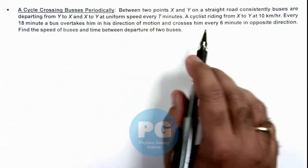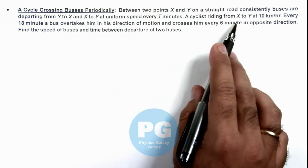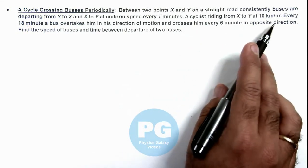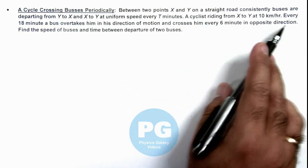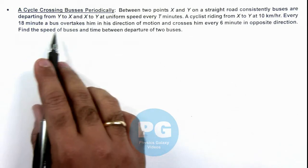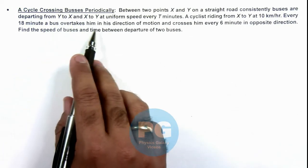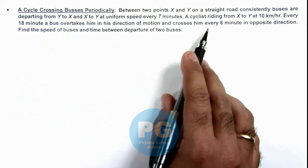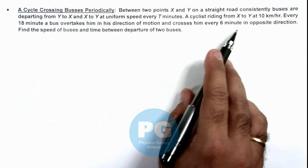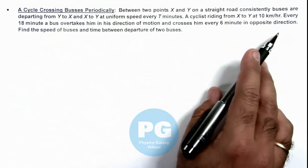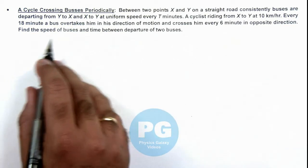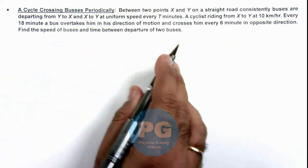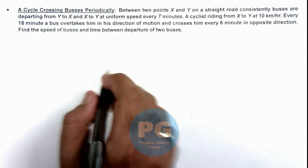A cyclist is riding from X to Y at 10 kilometers per hour. Every 18 minutes a bus overtakes him in his direction of motion, and every 6 minutes a bus crosses him in the opposite direction. We are required to find the speed of the buses and the time T between departure of 2 buses.